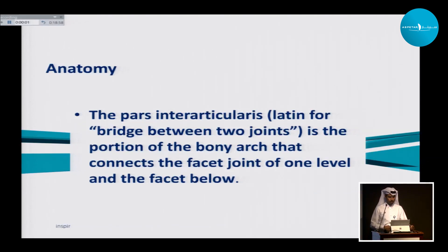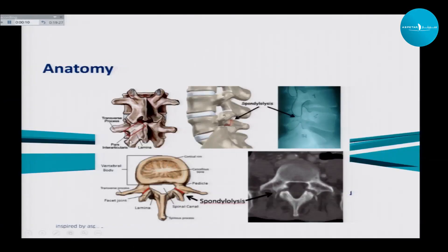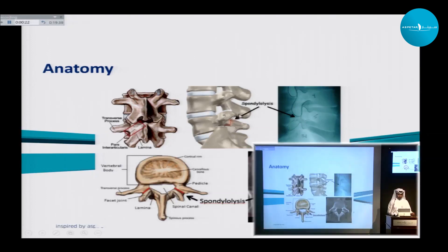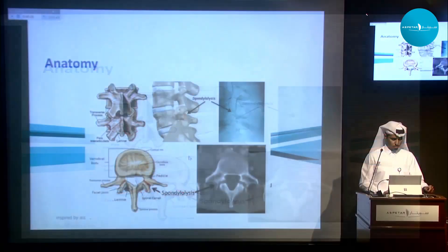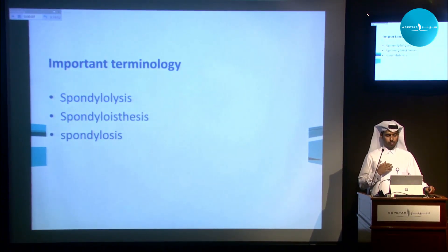I tried to simplify the lecture as we have a mixed audience. The pars interarticularis means the connection between two joints. You can see here a facet joint, another facet joint, and the pars is the piece that connects them. On x-ray you can see it clearly. There is very important terminology: spondylolysis, spondylolisthesis, and spondylosis.